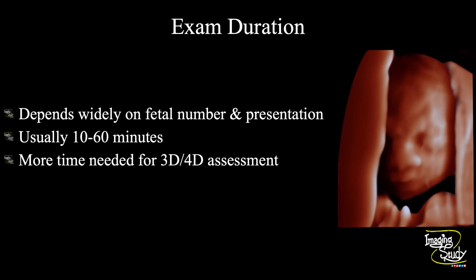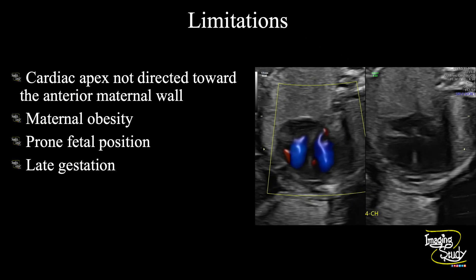Exam duration varies from patient to patient depending on fetal number and presentation. It can take around 10 to 20 minutes, but sometimes more than 60 minutes, especially if there is complicated congenital heart disease. If you also want to do 3D ultrasound, expect to put in more time. When the cardiac apex is directed downward, it is very difficult to assess the fetal heart. For optimal views we need the cardiac apex directed toward the anterior maternal wall, but this is not always possible.